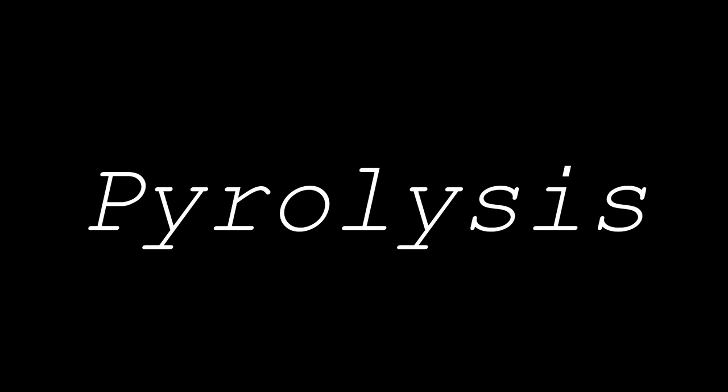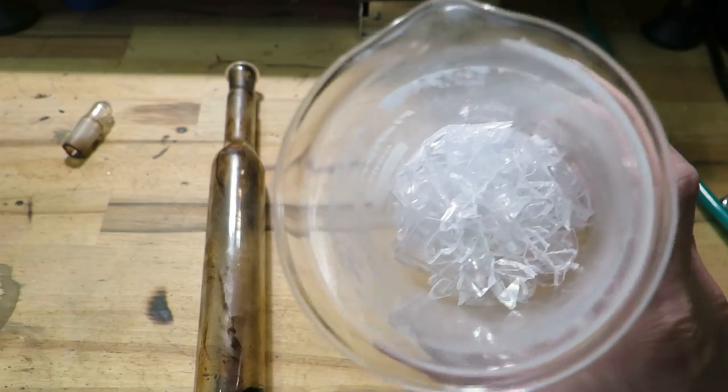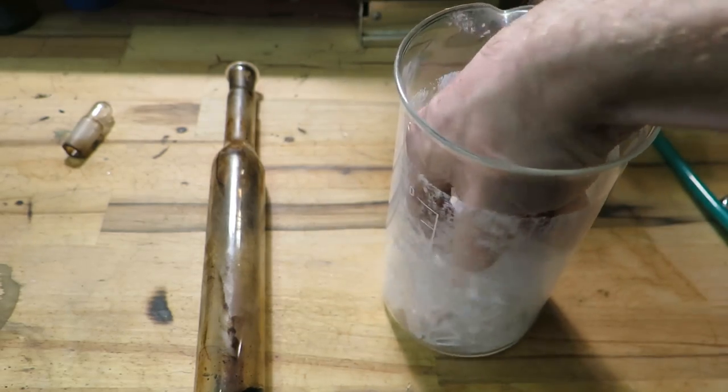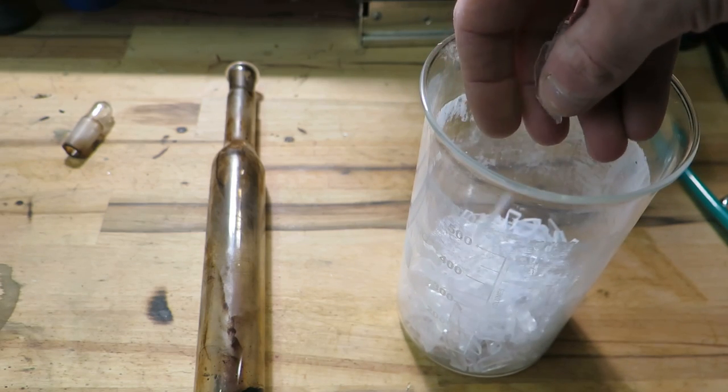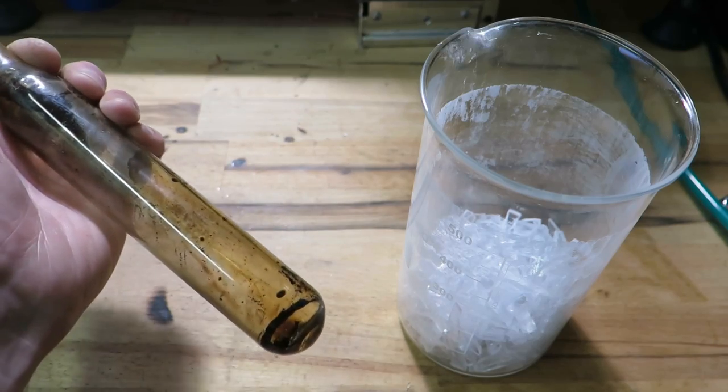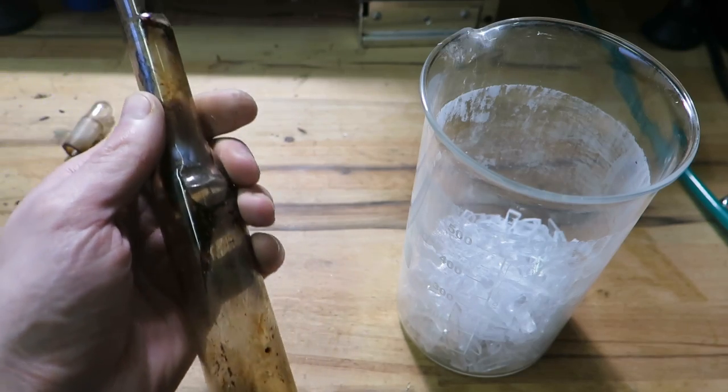So the first step is to pyrolyse polystyrene into styrene. This is pretty simple actually. You need polystyrene, you can use foam but some transparent thick pieces are better. And some sacrificial glassware. I mean it may survive but you probably don't want to use it anymore.